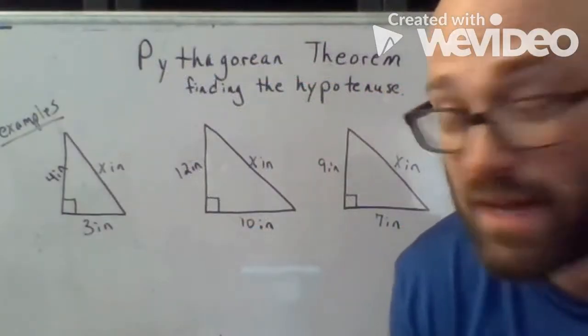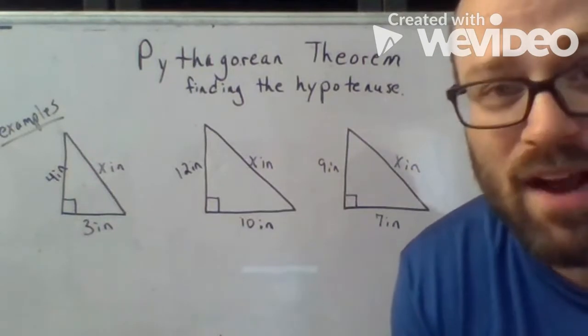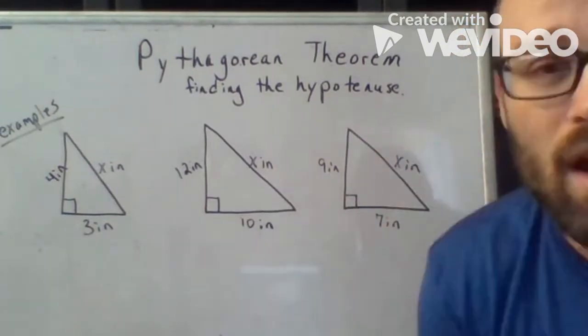Alright, so like I said, we're getting into the Pythagorean Theorem today, finding the hypotenuse, which is the long side of the triangle.